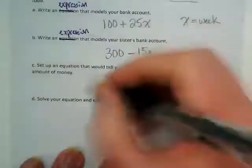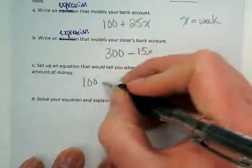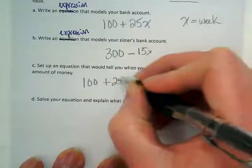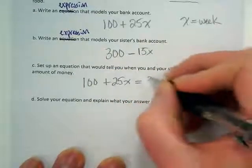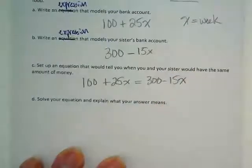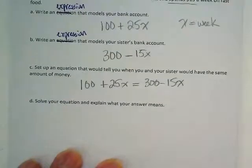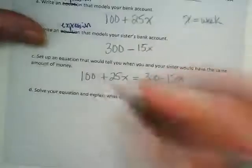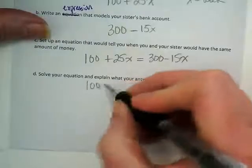The equation for this would be to set them up equal to each other because I'm trying to find out when my sister and I will have the same amount of money in the bank. And then to solve this equation, I'm just going to rewrite it down here.